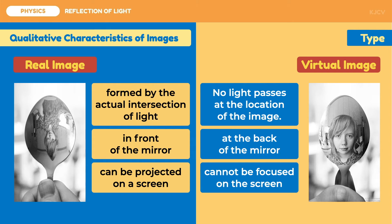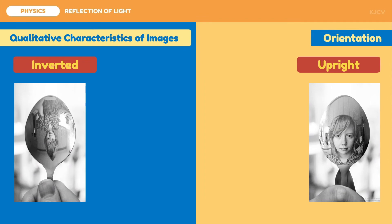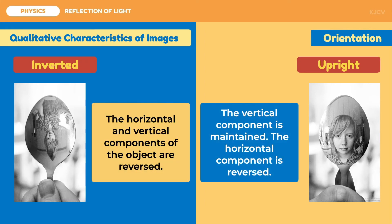Another evident difference between the two is the image's orientation, which is dependent on the object's position. There are two things to consider: first is vertical inversion, meaning the upper side of the object becomes the lower side of the image — if this happens, the image is inverted; if not, it is upright. The second is horizontal inversion: images are always laterally inverted, so your left side will always be your image's right side. It is important to note that real images are always inverted and virtual images are always upright. When light rays intersect in front of the mirror, the image is inverted; if they intersect at the back, the image is upright.